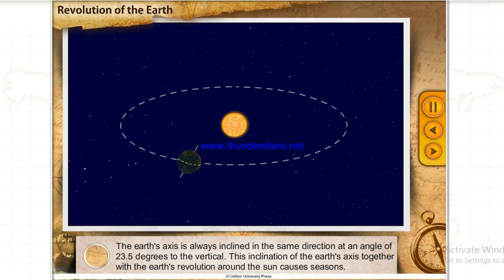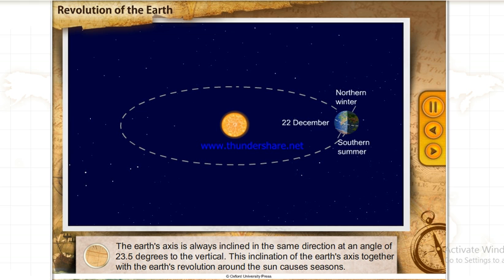The Earth's axis is always inclined in the same direction at an angle of 23 and a half degrees to the vertical. This inclination of the Earth's axis together with the Earth's revolution around the Sun causes seasons.